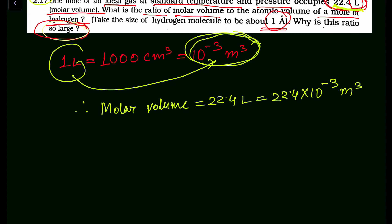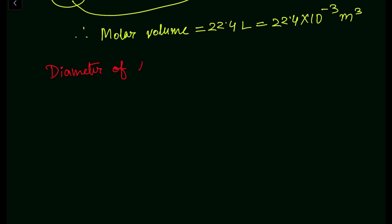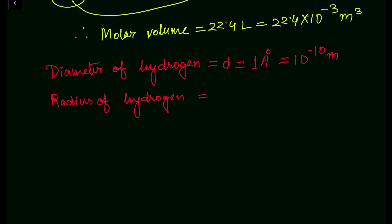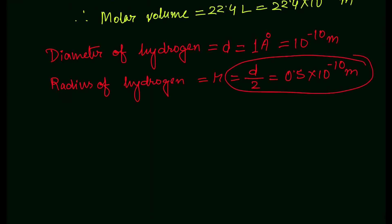We are given in the question that the size of the hydrogen molecule is 1 angstrom, so the diameter d = 1 angstrom = 10⁻¹⁰ meter. Now we find the radius: r = d/2 = 0.5 × 10⁻¹⁰ meter. This is the radius of the hydrogen atom.